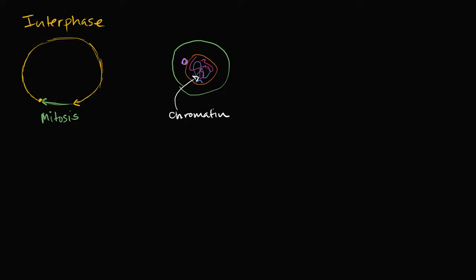Now there's one other thing that I drew here. You might say, why am I drawing it when I haven't drawn most of the other organelles? But I'm drawing this thing which is called a centrosome, because it's going to be important when we go into mitosis.